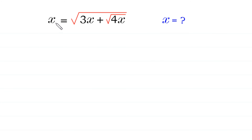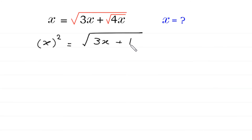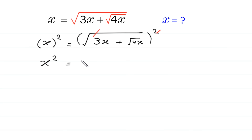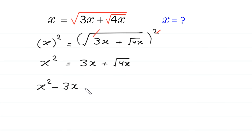So let us start by taking the square of both sides. x squared is equal to square root of 3x plus square root of 4x, and we take the square of both sides. The square of x is x squared, equal to 3x plus square root of 4x. Next, we move this 3x to the left side: x squared minus 3x is equal to square root of 4x.